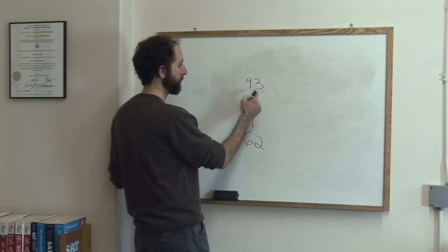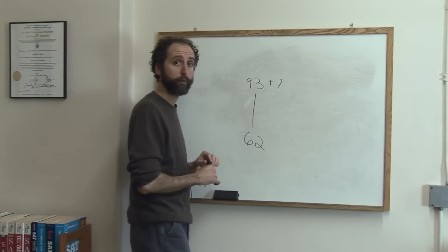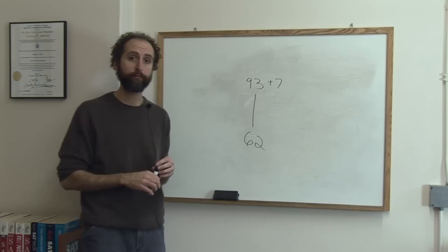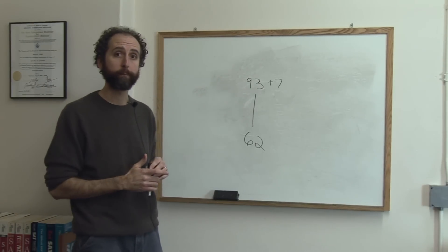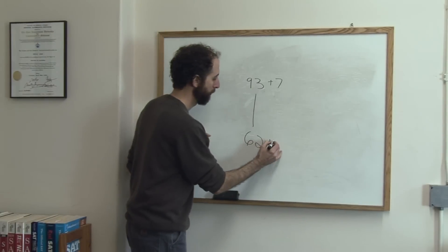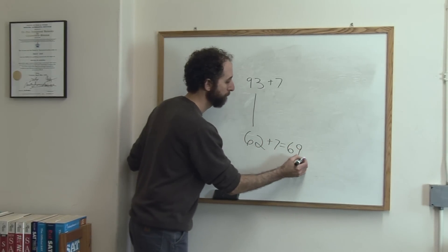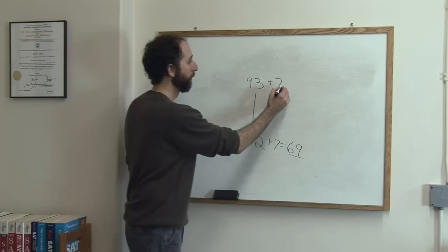So you say, okay, this student needed seven points to get 100, so I'm going to add seven points onto every person's grade. So each grade now becomes seven points higher. So this 62 becomes a 69, and this 93 becomes 100.